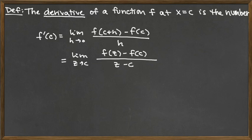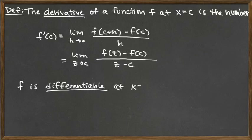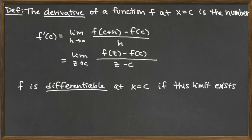We say that the function f is differentiable — so that's our other new term. f is differentiable at x equals c if this limit exists. These limits are either both going to exist or both not going to exist, because it's really just an algebraic change of variable for these two. They're the same sort of thing — it's the limit of the difference quotient where we're letting our two x values get close together.